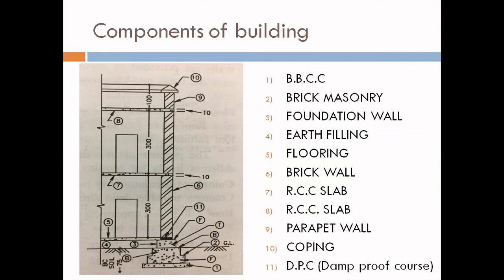Third is foundation wall. Fourth is earth filling. Fifth is flooring. Sixth is brick wall. Seventh is RCC slab, which forms the roof — RCC stands for reinforced cement concrete. Eighth is also an RCC slab on another floor; this construction is shown as a two-floor building. Ninth is parapet wall, which is the wall on top of the terrace. Number ten is coping, and number eleven is DPC — damp proof course.